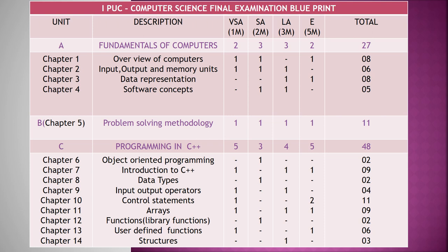Unit B is Problem Solving Methodology. It has one one-mark question, one two-mark question, one three-mark question, and one five-mark question — totaling eleven marks. There are no sub-chapters in Unit B; it has only one chapter called Problem Solving Methodology. Unit C is Programming in C++, with a total weightage of 48 marks covering nine chapters.